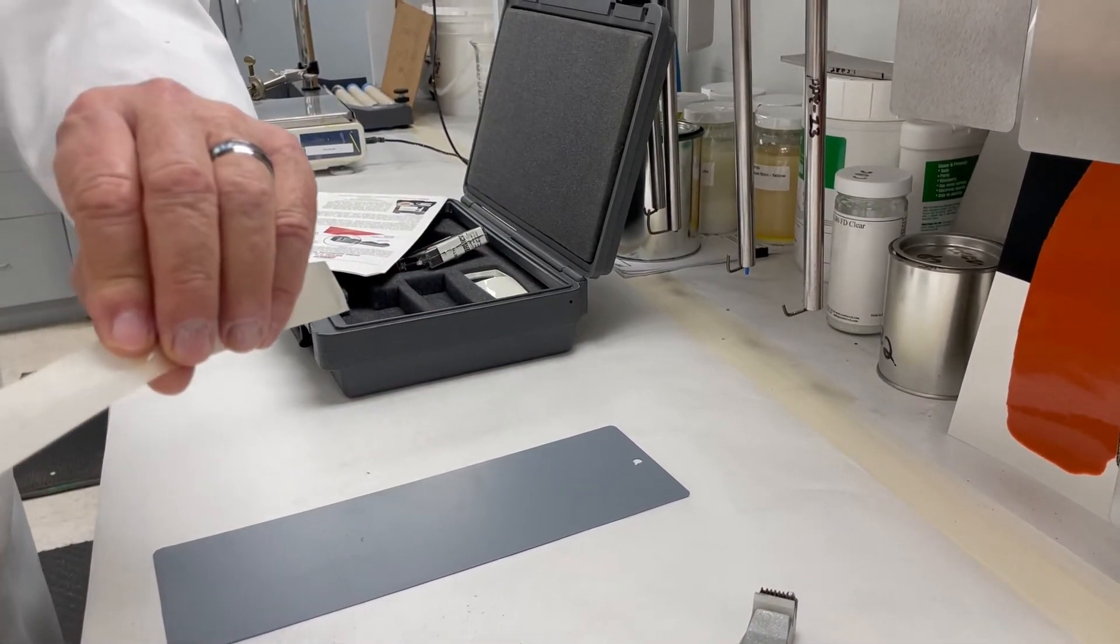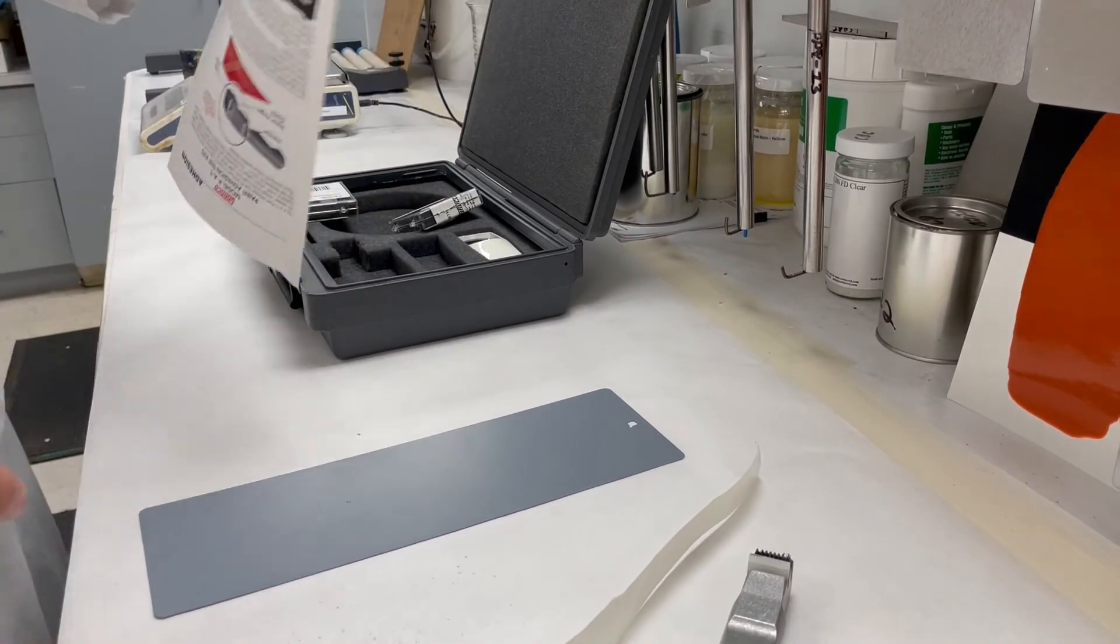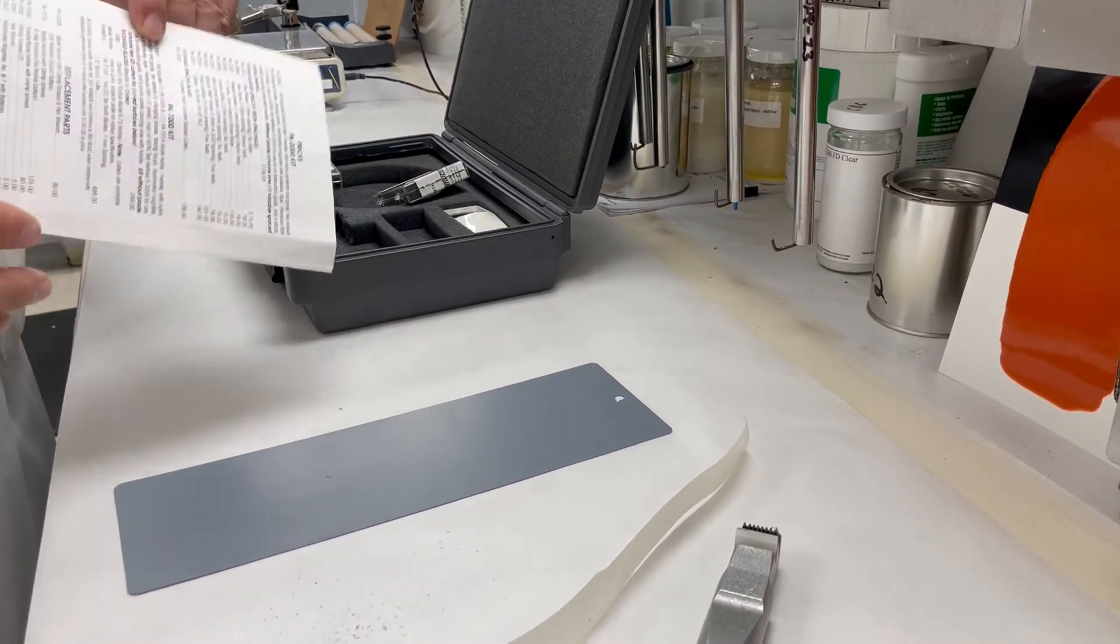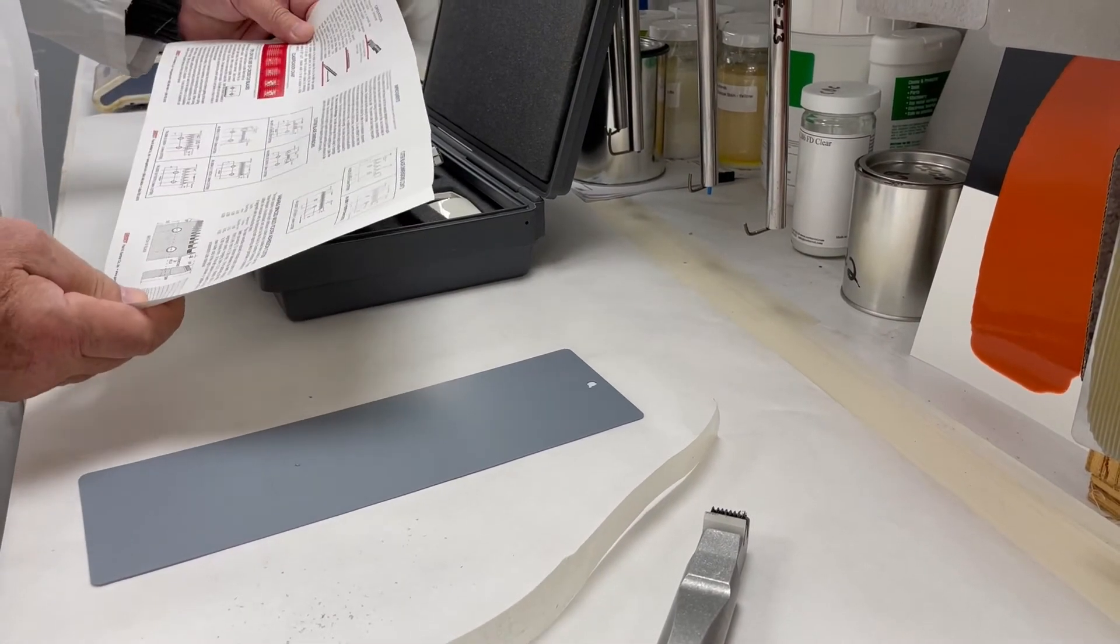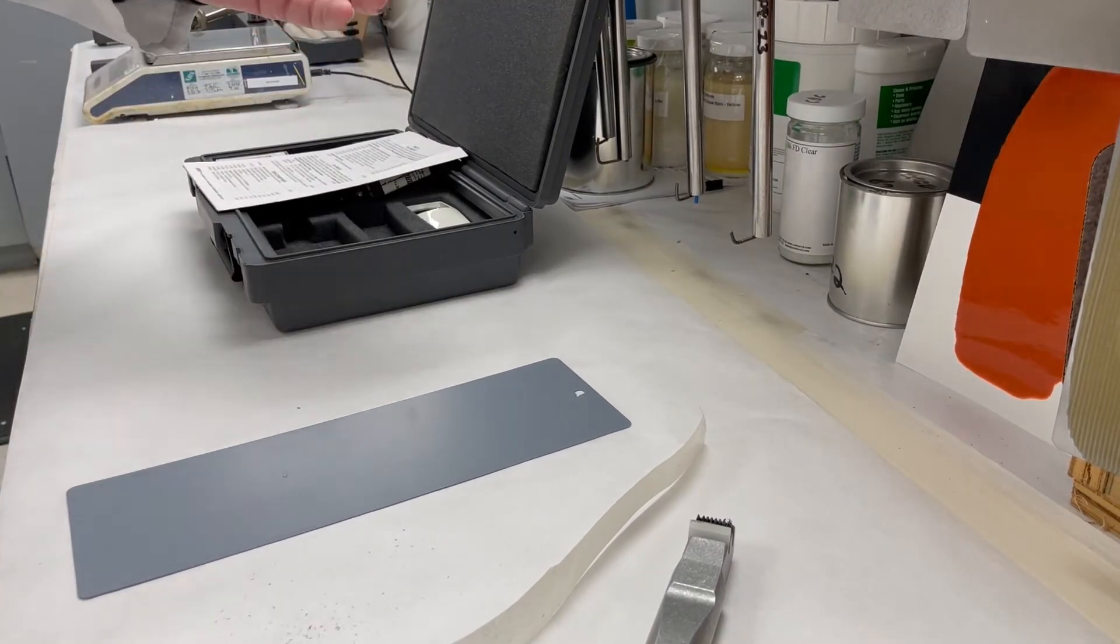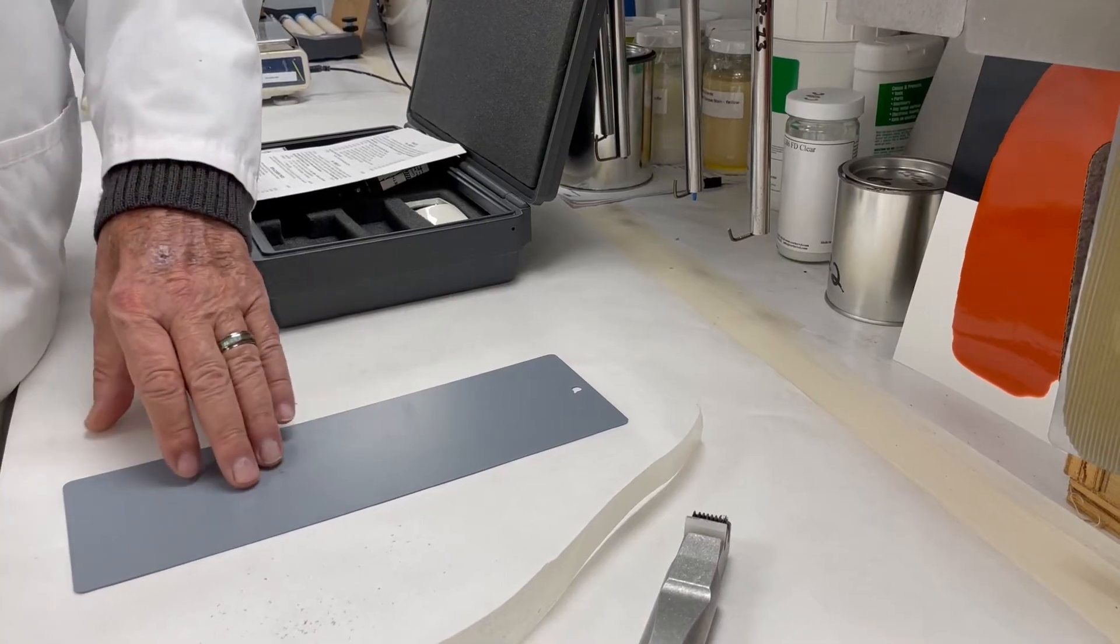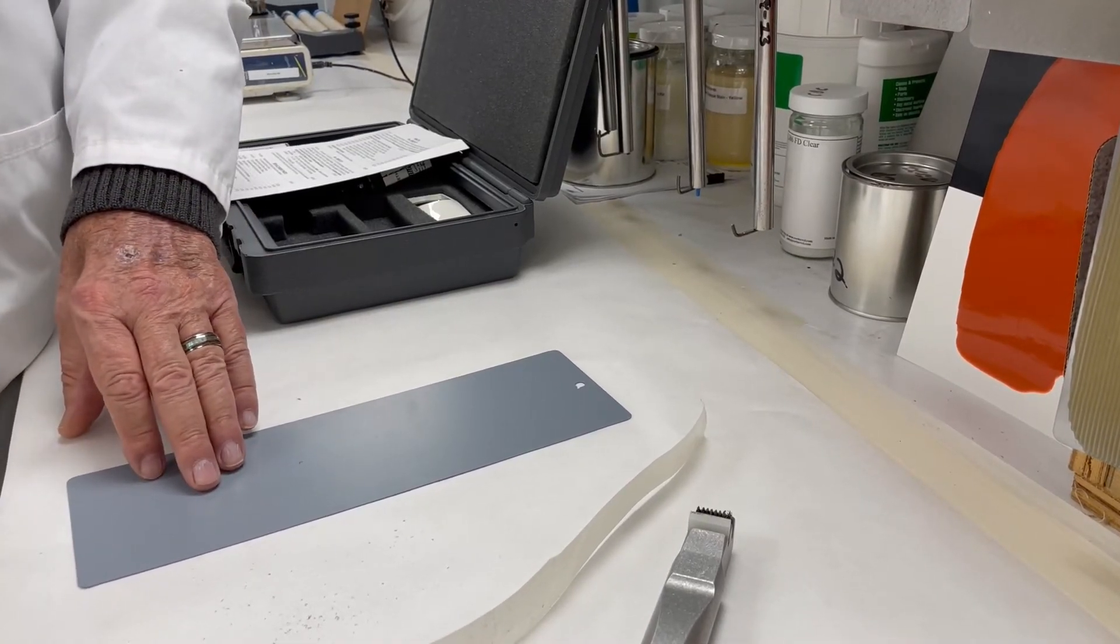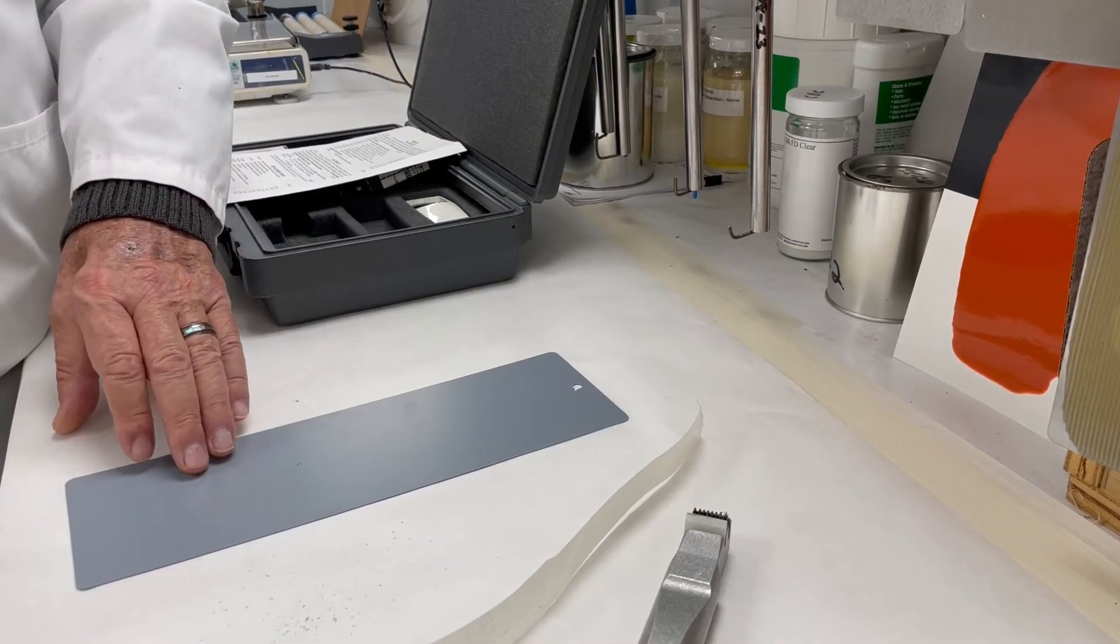Now you can see we didn't pull any of the squares off. So when you look at ASTM D3359, it'll give you a rating system which will tell you if it's either a 0B, 2B, 3B, 4B, or 5B. With nothing being pulled off from the crosshatching tape, this is considered a 5B and excellent adhesion.